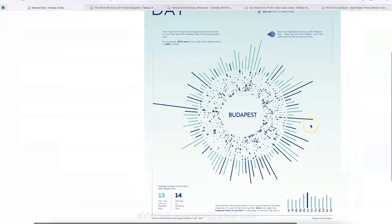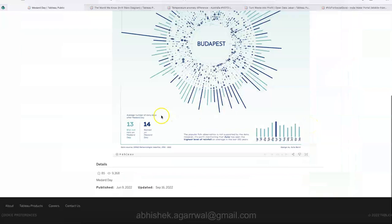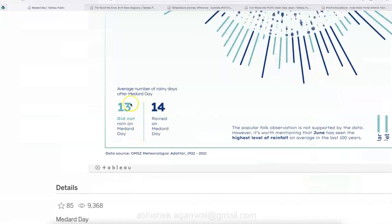So that's a quite interesting visualization. Also down below, some legend, which is average number of rain days after Medard Day, 13 days it did not rain on Medard, and 14 is rain on Medard Day.